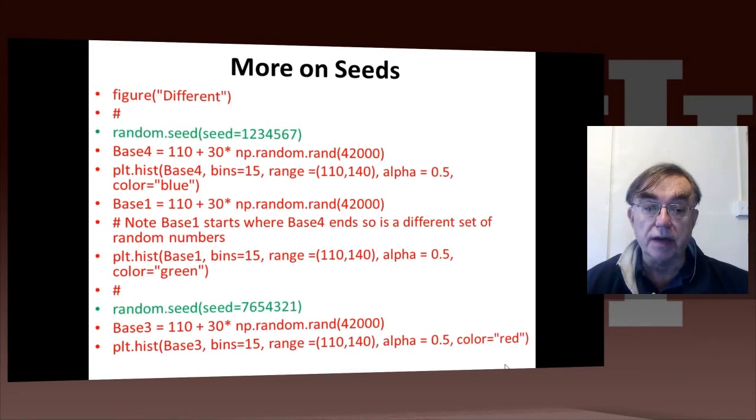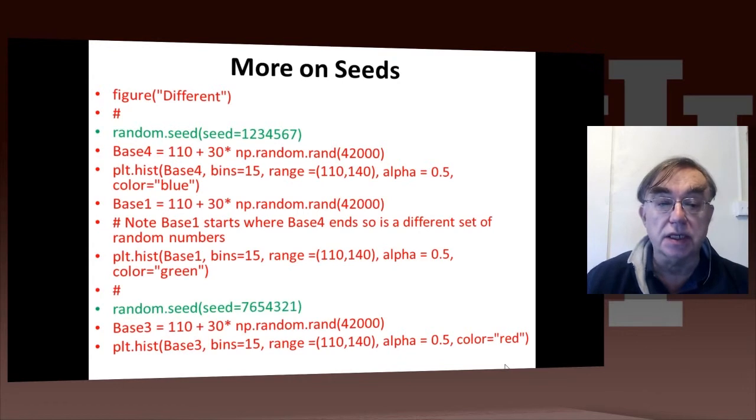As an alternative way of getting a different answer, we just set to a different seed. So base3 corresponds to the seed 7654321, different from that for base4 and different from that for base1. We don't actually know what the seed is for base1, it's just whatever the random number was at the end of the base4 calls.